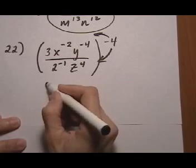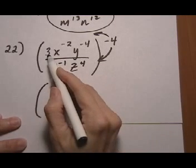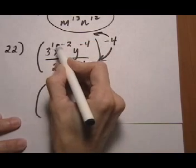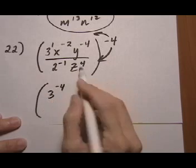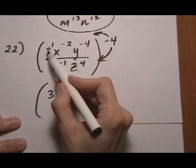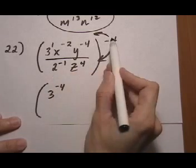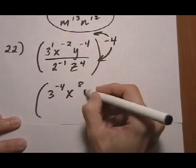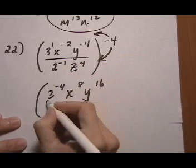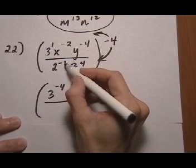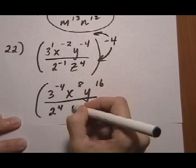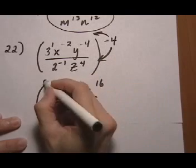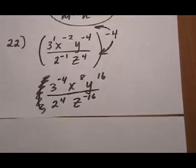So then let's go ahead and give everybody the negative four exponent. Three to the negative four. Now three has a one exponent. So we're going to multiply power to power. One times minus four. We don't want to do three times minus four is minus twelve. Alright, because we have a power raised to a power. We need to multiply the exponents. X to the minus two times minus four is eight. Y to the minus four times minus four is sixteen. Over two to the minus one times minus four is two to the four. Z to the four times minus four is minus sixteen. And I don't really need those parentheses anymore because we got rid of the exponent on the outside.